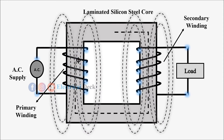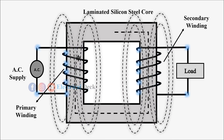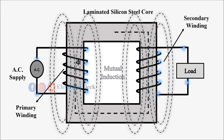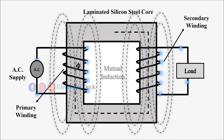As the supply given to the primary winding is alternating, it induces an EMF in the secondary winding. This is due to mutual induction between the two coils. The induced EMF in the primary and secondary windings depends upon the rate of change of flux linkage between the two windings. Let us now derive the equation for the amount of EMF induced in the primary and secondary windings.